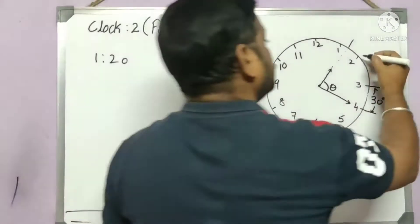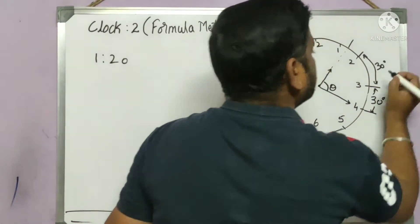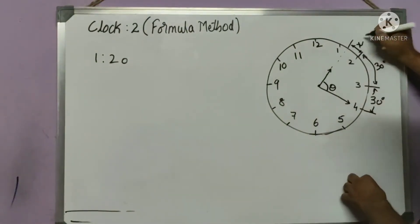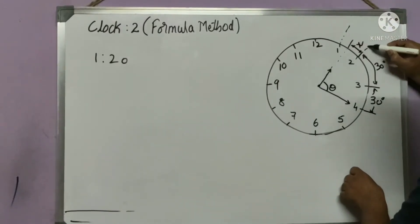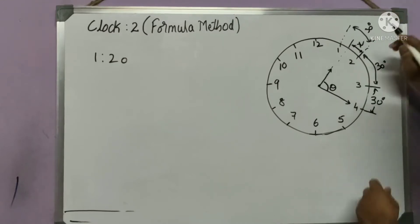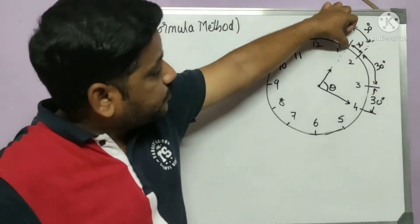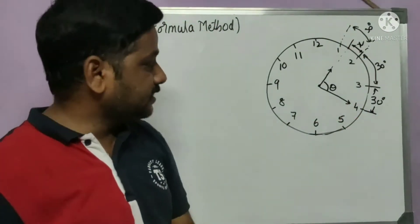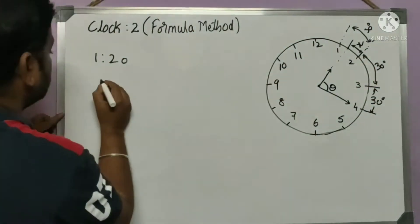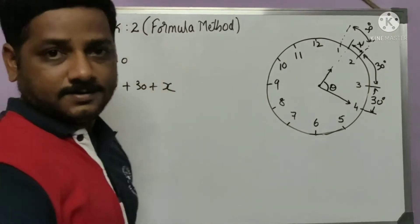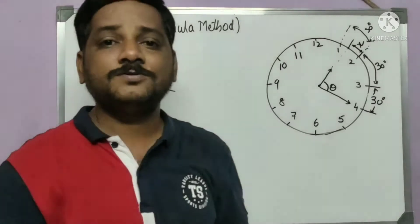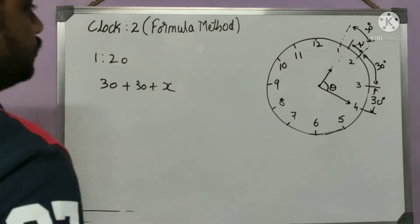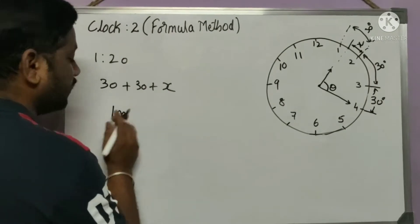The traditional method looks at the sector angles. Each sector is 30 degrees — as explained in the previous video. From 3 to 4 is 30 degrees, and 2 to 3 is also 30 degrees. The angle from the hour hand position to 2 is unknown — call it x. So the total angle is 30 plus 30 plus x. We need to find x.